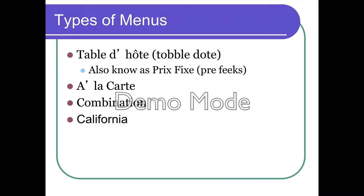Let's talk about different types of menus. First, prefix menus — these are menus where you don't have options. You have an appetizer, an entrée, and a dessert. Sometimes a prefix menu will give you a choice of entrée, so maybe a five-course prefix menu where you choose between soup or salad and then a chicken, fish, or beef dish. But a lot of times you don't even have those options — it's fixed, and you either order that or something else.